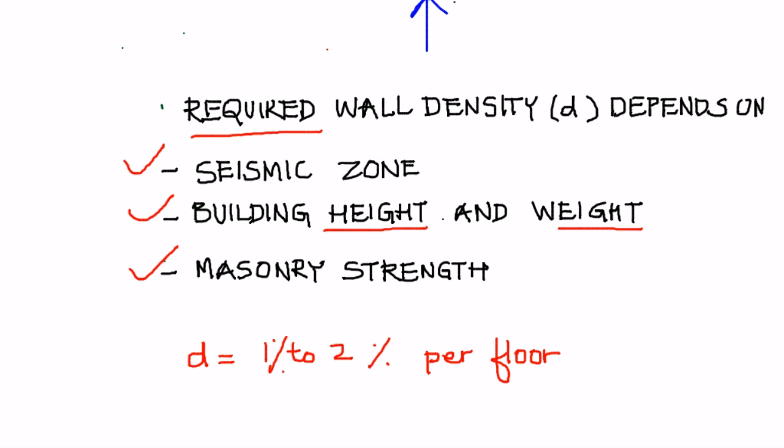A general rule for wall density is that the order of magnitude for the d value is 1 to 2% per floor. At a minimum, a single-storey building should have 1% wall density at the base level, and a 2-storey building should have 2% at the base level. This number could increase if masonry strength is lower or if the seismic zone is higher.